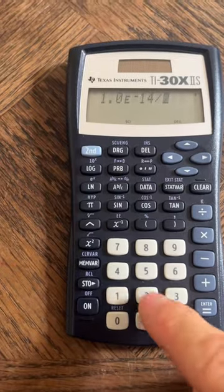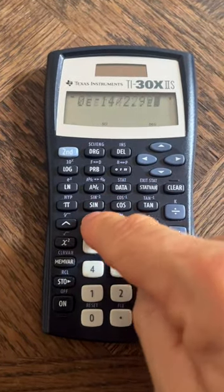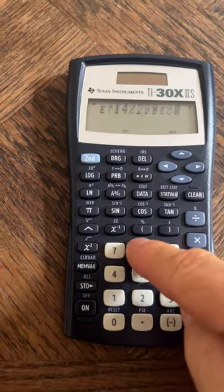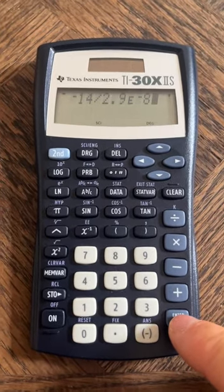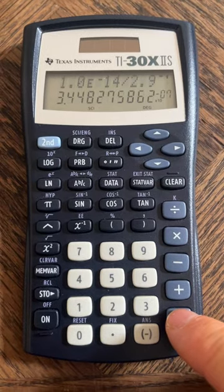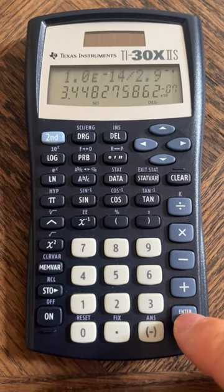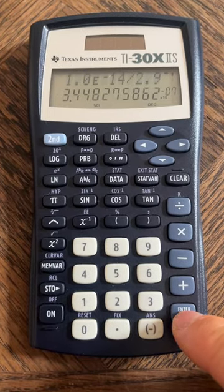Then I'll divide it by 2.9, second function EE minus 8. Again, no parentheses if you use this EE button thing. And I get 3.4 or 3.45 times 10 to the minus 7. That's how you get the answer on this calculator.